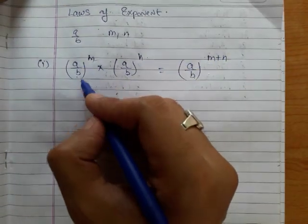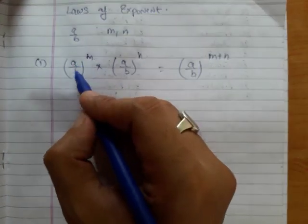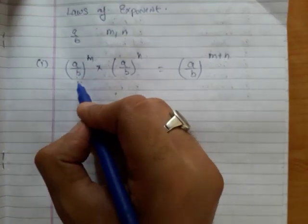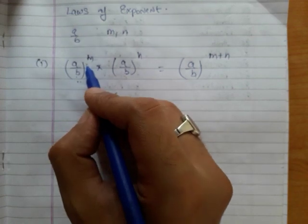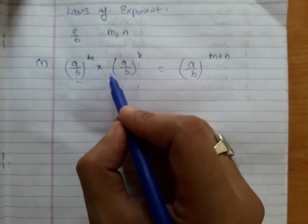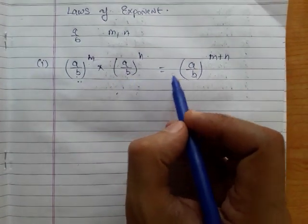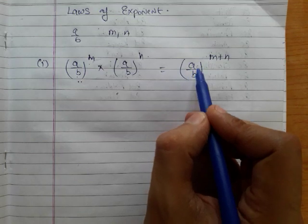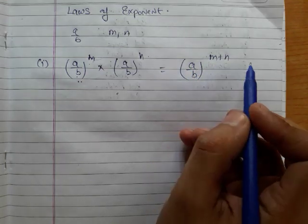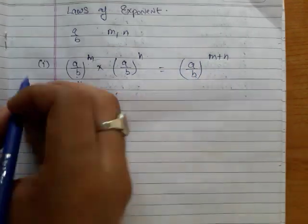That means if there is a rational number a over b whose power is m, and it is multiplied by a over b whose power is n, then we can write a over b raised to the power m plus n.